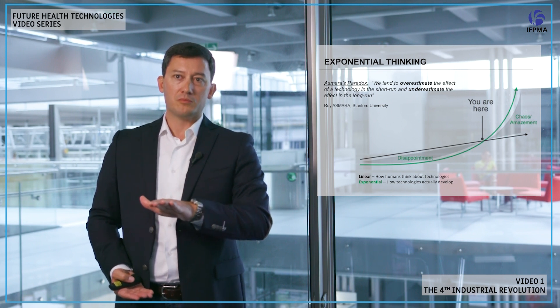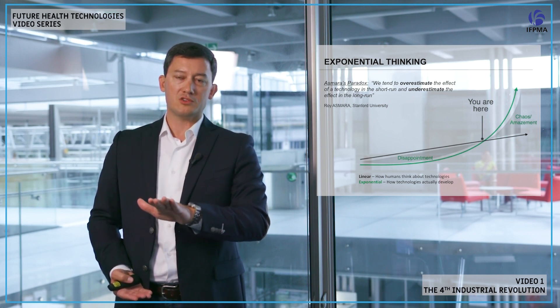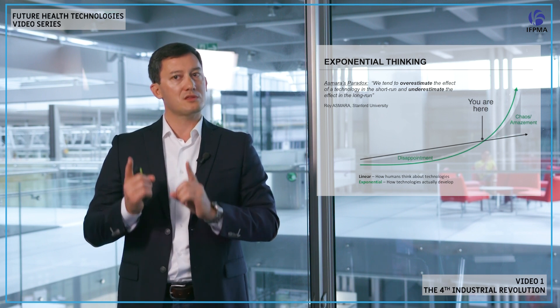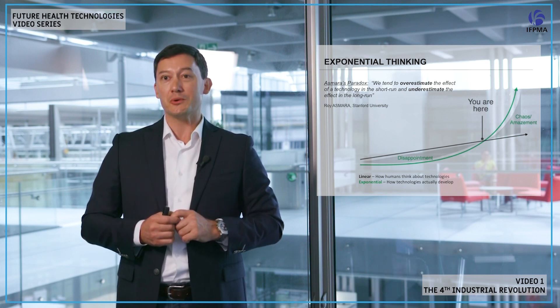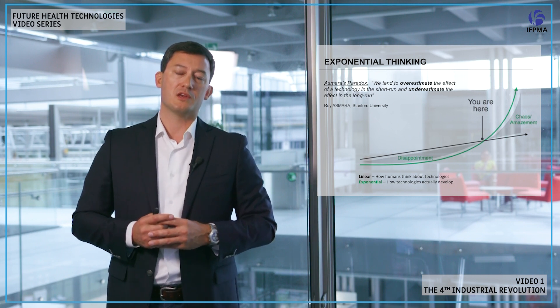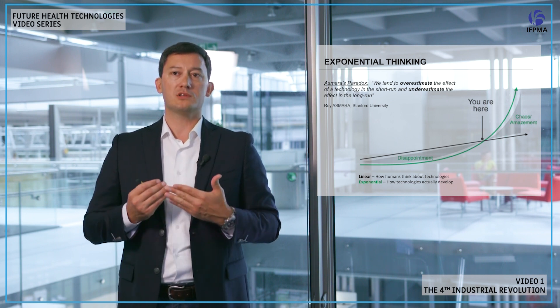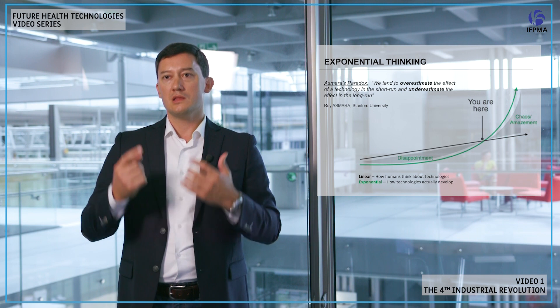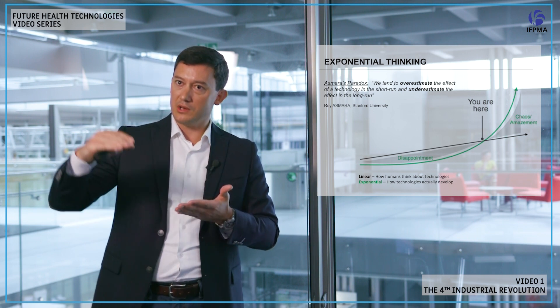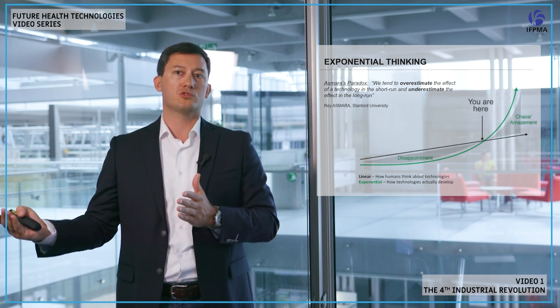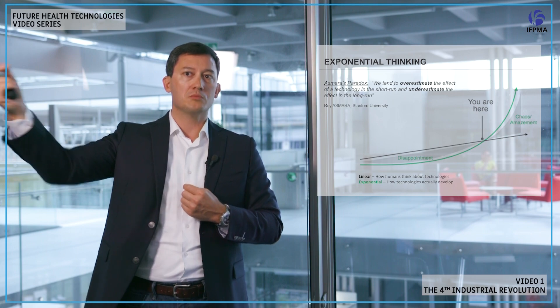But we are at the inflection point. As you can see, we are here where technology is starting to do more than we can think it actually does — and that's what this chaos and amazement phase is. So what we urge you to do is to really start thinking exponentially. It is important to start understanding these technologies, not thinking linearly but thinking exponentially, so you are able to project yourself and understand the true potential those technologies are offering us — not in the distant future, but now.